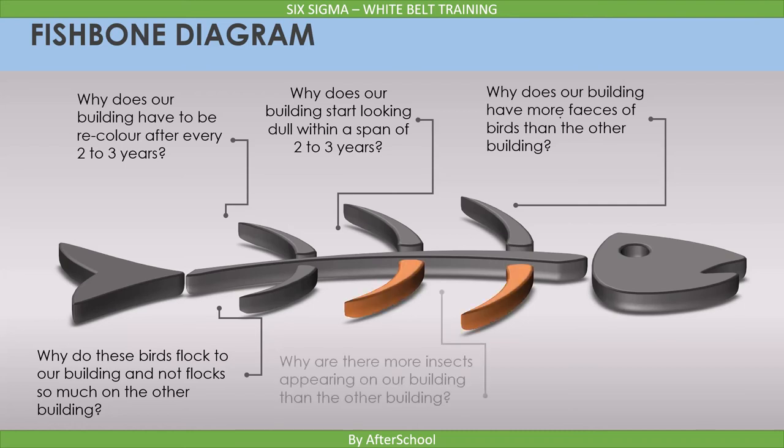The administrator asks the fifth why question: why are there more insects appearing on our building than the other building? The answer: because we switch on the building lights at 6pm, which is earlier than the other building. This is how the administrator asks the five whys to conclude.